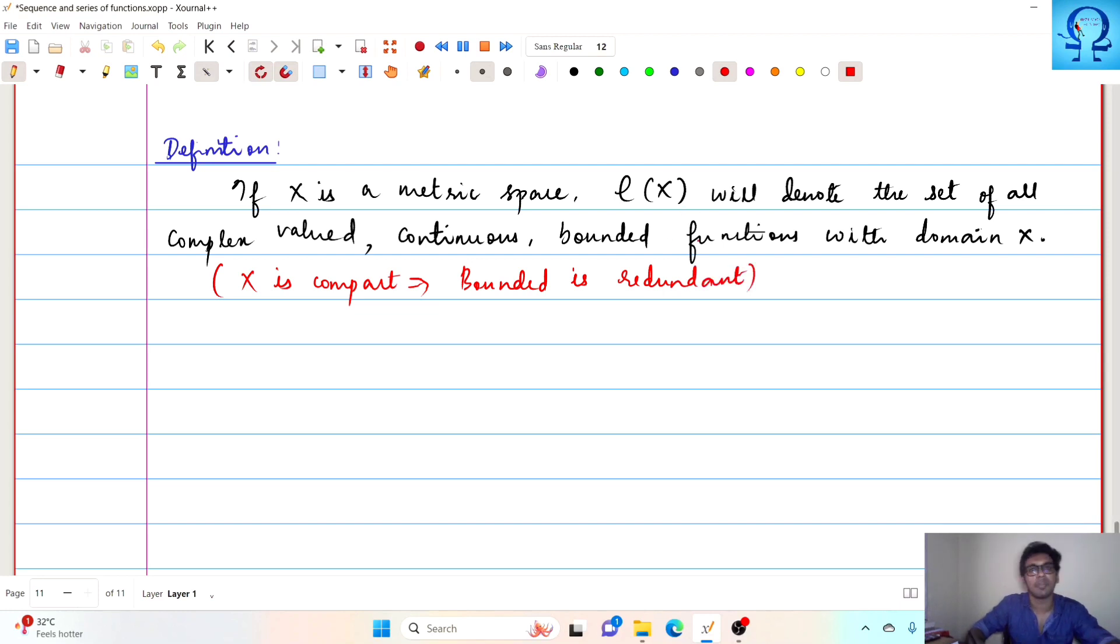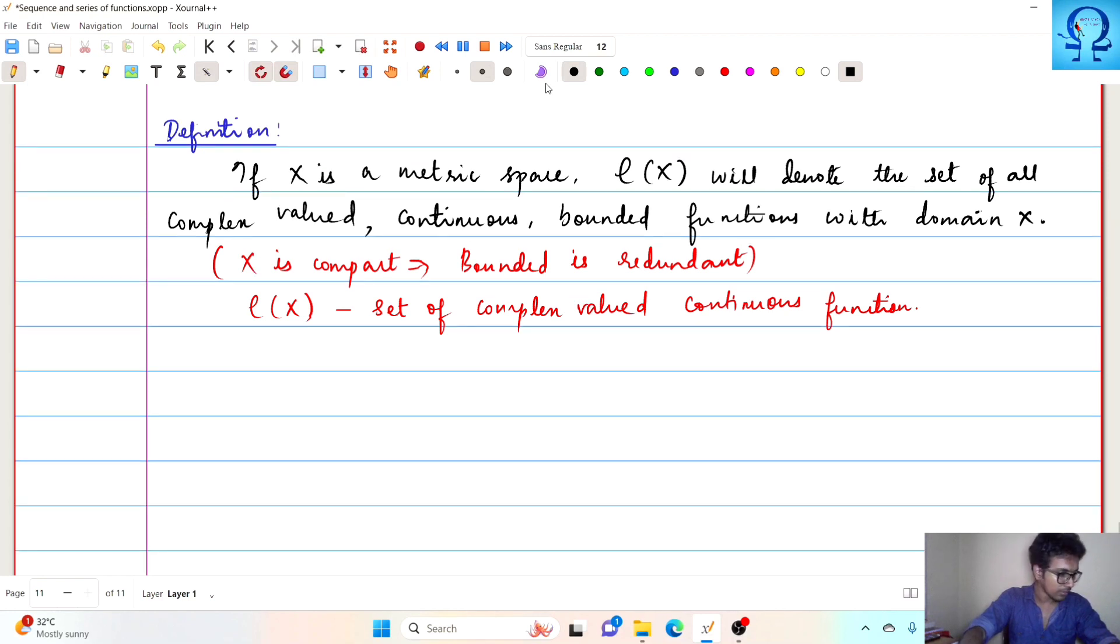Whenever your X is compact, it will be simply bounded. So in this case, you can say that C of X is the set of complex valued continuous functions. If you do not specify continuous functions, then boundedness will not come. Since it is compact valued and continuous, they will be bounded also.